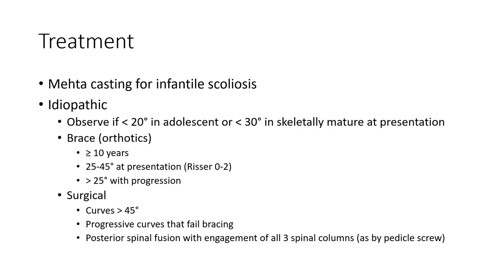Management: Mehta casting for infantile scoliosis. Idiopathic: observe if less than 20 degrees in adolescent or less than 30 degrees in skeletally immature patients. Bracing: indicated for curves 25 to 45 degrees with more than 10 years of growth remaining, or more than 25 degrees with progression. Surgical: curves more than 45 degrees or progressive curves, with posterior spinal fusion involving all three spinal columns using pedicle screws.